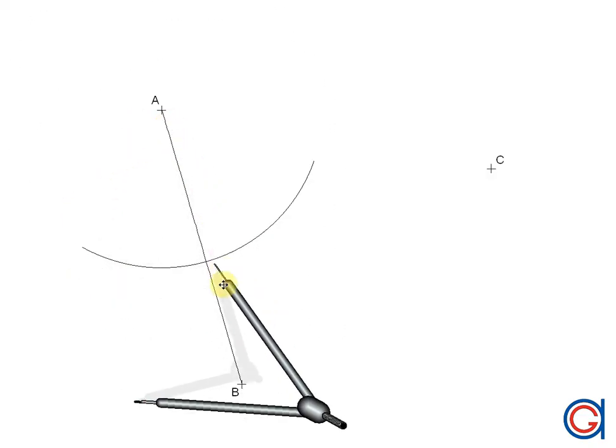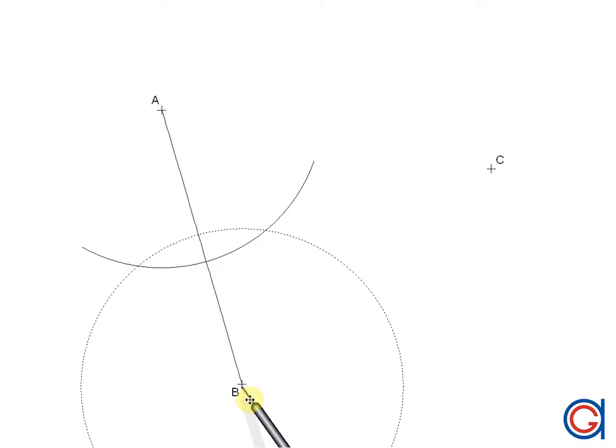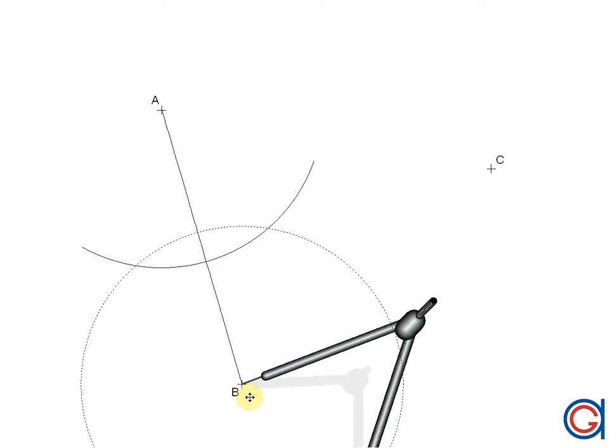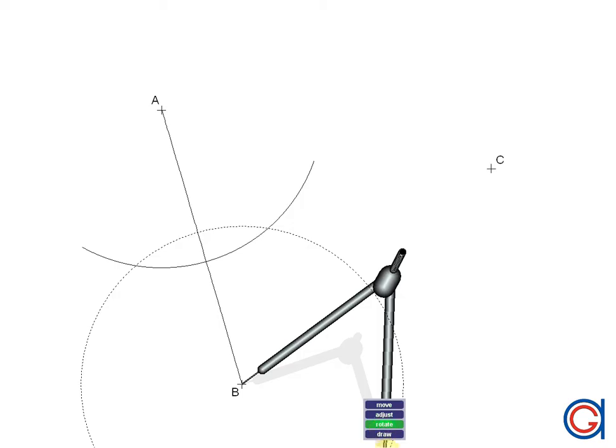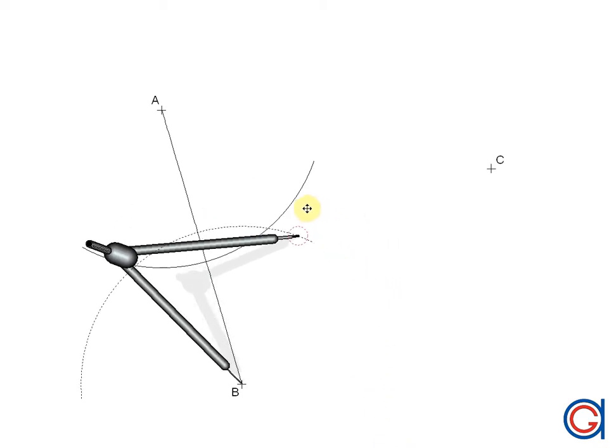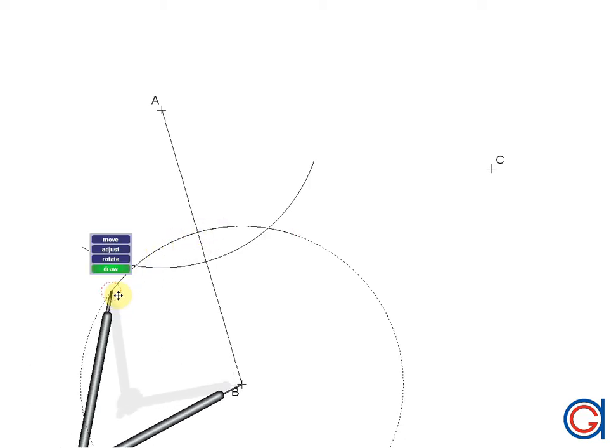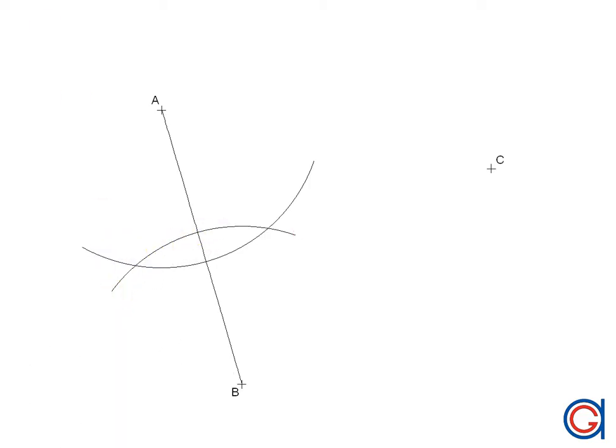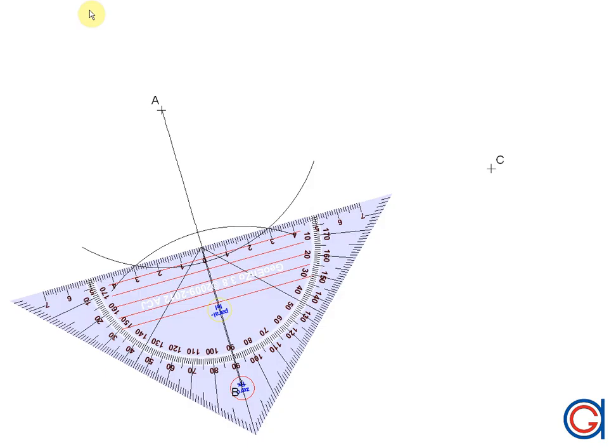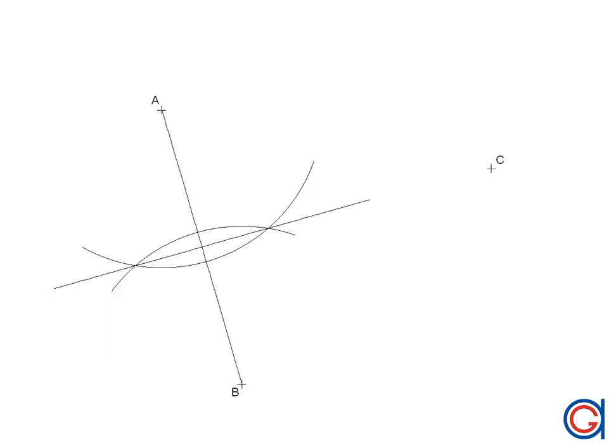And now with the same radius setting our compass on point B, we will scribe another arc to intersect our previously drawn arc. As seen here, and now finally we draw the perpendicular bisector through the intersecting points. Here we have the perpendicular bisector of the line segment AB.